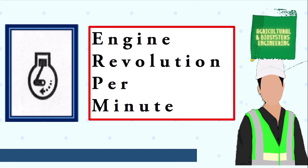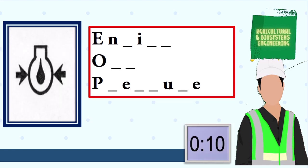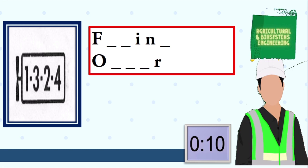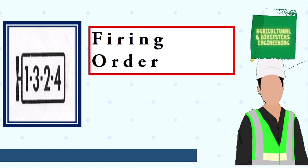The answer is engine revolution per minute. Next symbol, your 10 seconds starts now. The answer is engine oil pressure. Next symbol, your 10 seconds starts now. The answer is firing order. Next symbol.